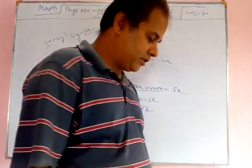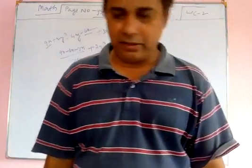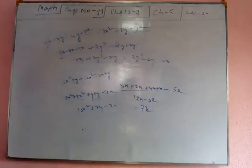This method of adding algebraic expressions by collecting like terms in a single line is called the horizontal method.